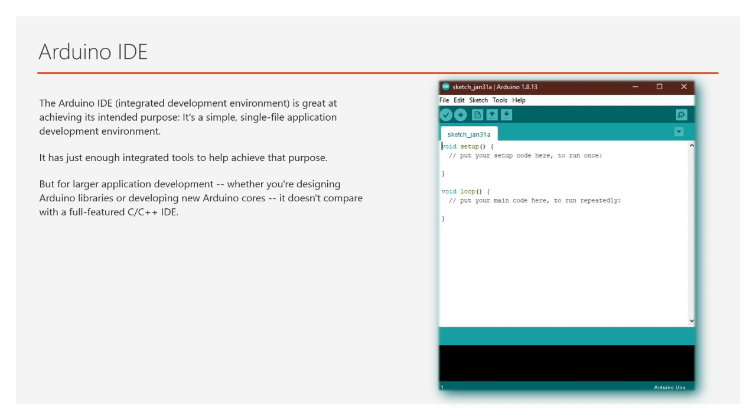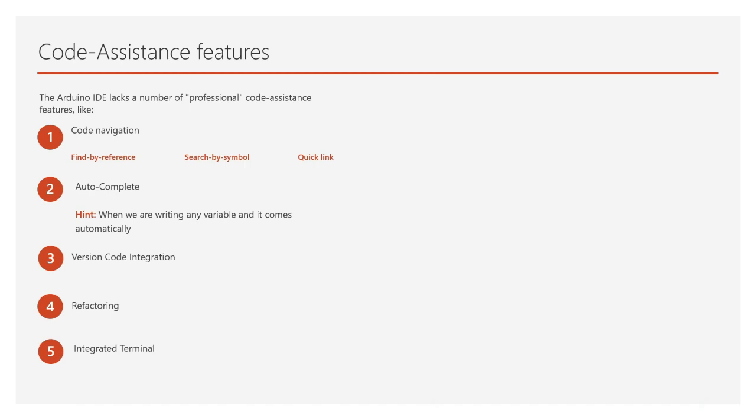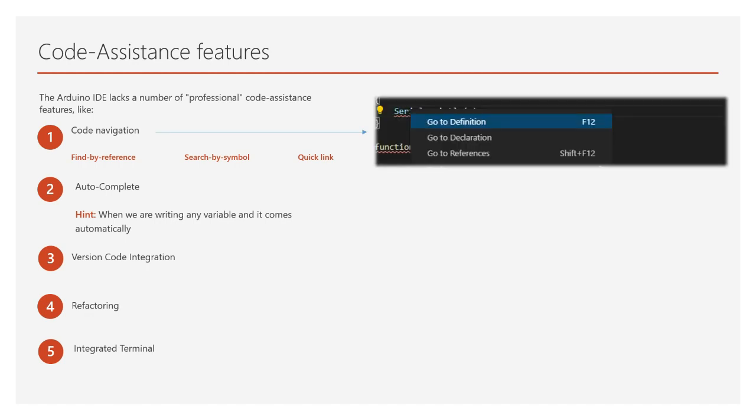The Arduino IDE lacks a number of professional code assistant features, like code navigation — whether it's find by reference, meaning instantly navigating to the definition of the function you are using; search by symbol, meaning quick navigation to function or symbol definitions within a file; or quick link to a compilation error. Code navigation is critical to manage large code bases. Suppose you are building code for an ESP32-based IoT automation device which includes WiFi, Bluetooth, and dual-core applications along with IoT data processing. You will need to define a lot of functions and variables, and navigation through that code helps in detecting and correcting errors — which Arduino IDE doesn't have.